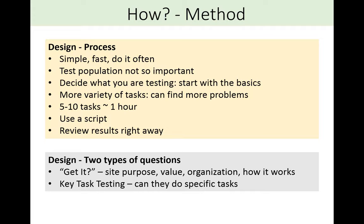Identify those first few things causing problems, make adjustments, and then go back and do more testing deeper and deeper within your decision support tool. In each session, choose a variety of tasks but not too many — it takes about an hour to ask somebody to do five to ten tasks. You'll be using a script so that you can control your engagement with them. Sometimes it's very tempting to help them out, but the idea is to just watch as they're trying to use the tool without your help. Review your results right away. It's not like you have to write up a big report — it's simply a test to make the development of your tool more effective.